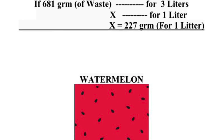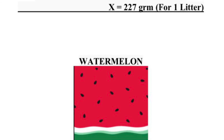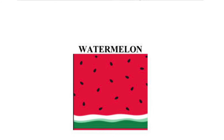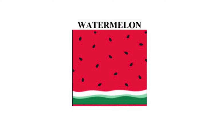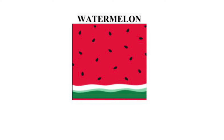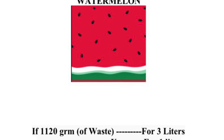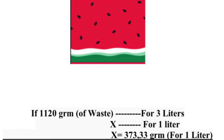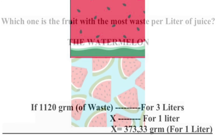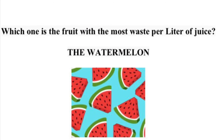We did the same with the watermelon, knowing that if for 1,120 grams of waste it is for three liters, and we did the rule of three, the answer was 373 grams for one liter. So that means the fruit with the most waste per liter is the watermelon.